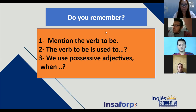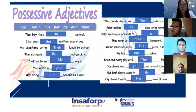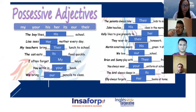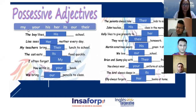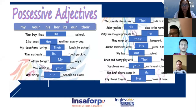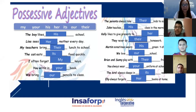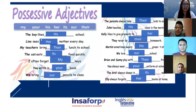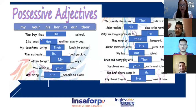Okay, so moving forward — possessive adjectives. We have seven on this side and ten on the other side. We're going to read the first ones. Vamos a iniciar con las siete de la izquierda.